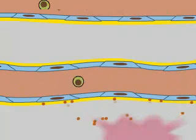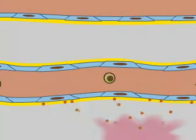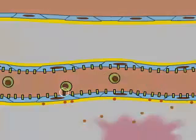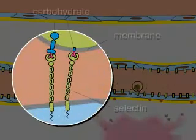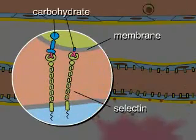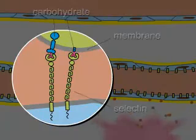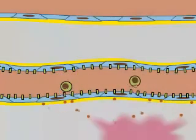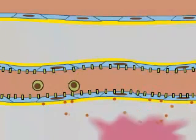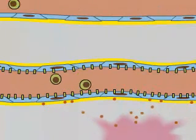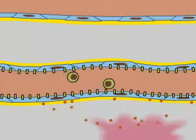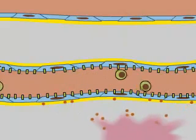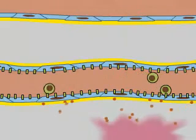The endothelial cells then express surface proteins called selectins. Selectins bind to carbohydrates displayed on the membrane of the leukocytes, causing them to stick to the walls of the blood vessels. This binding interaction is of sufficiently low affinity that the leukocytes can literally roll along the vessel walls in search for points to exit the vessel.